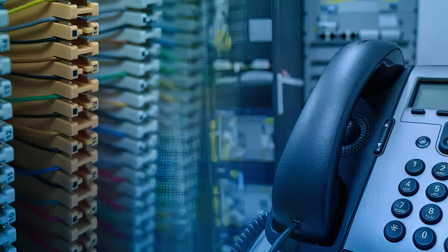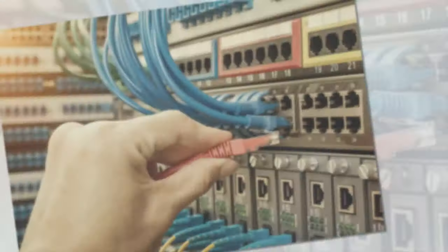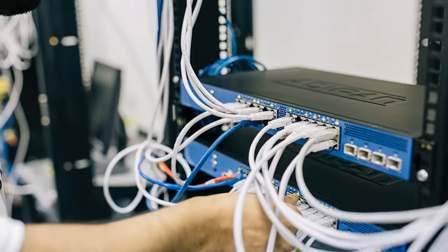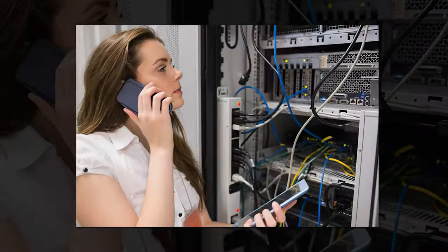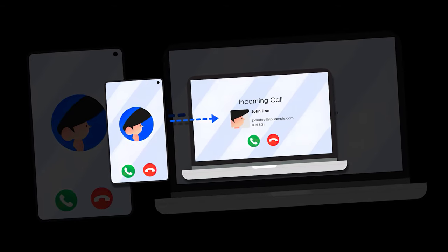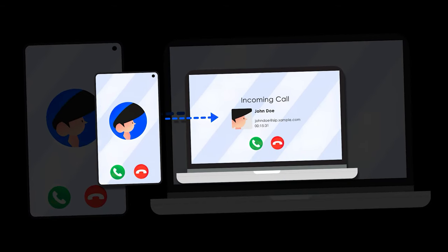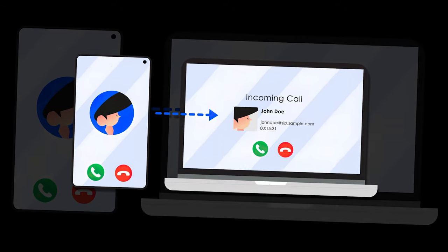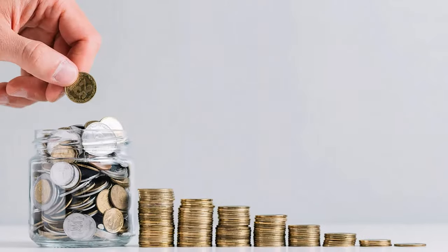Analog extensions must be physically installed on-site and connected to the PBX system. Virtual extensions, on the other hand, are standard VoIP phone system features and don't require on-site installation, making them much more convenient and affordable.